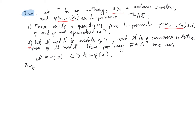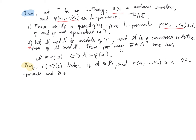Let us begin the proof of the theorem. First we prove the implication 1 implies 2, which is the easier one. Note that if A is a substructure of B and psi of x1 through xn is a quantifier-free formula, and a-bar is a tuple from the base set of the substructure A of length n, then A satisfies psi of a-bar if and only if B satisfies psi of a-bar. So the truth value of quantifier-free formulas is preserved by extensions of structures.